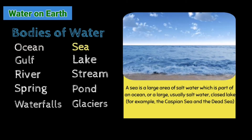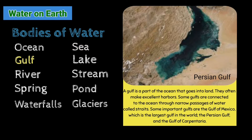A sea is a large area of salt water which is part of an ocean, or a large body of salt water. For example, the Caspian Sea and the Dead Sea. A gulf is a part of the ocean that goes into land. They often make excellent harbors. Some gulfs are connected to the ocean through narrow passages called straits. Important gulfs include the Gulf of Mexico, the largest gulf in the world, the Persian Gulf, and the Gulf of Carpentaria.